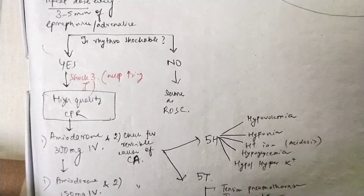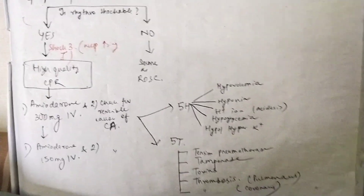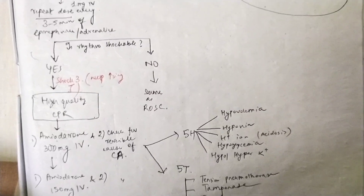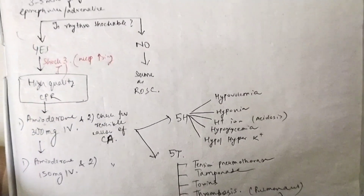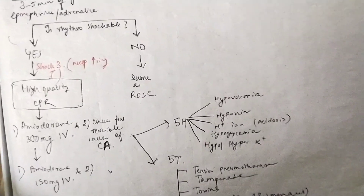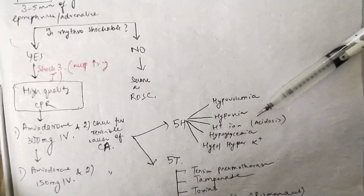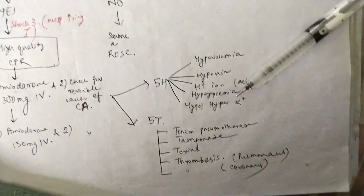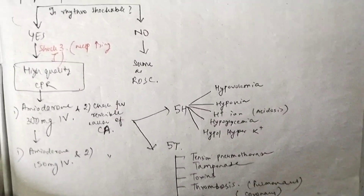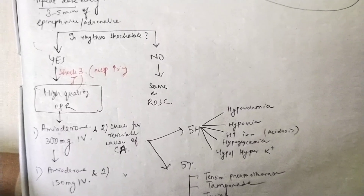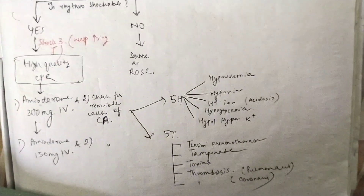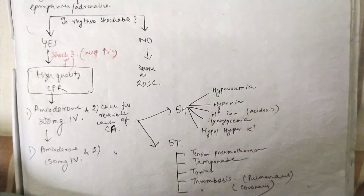Even after shock 3, if the patient is not revived, start amiodarone 300 mg and look for reversible causes of cardiac arrest. These are the 5H and 5T. The 5H are: hypovolemia, hypoxia, acidosis (H+ ion excess), hypoglycemia, and hypo/hyperkalemia. The 5T are: tension pneumothorax, tamponade, toxins, pulmonary thrombosis, and coronary thrombosis.